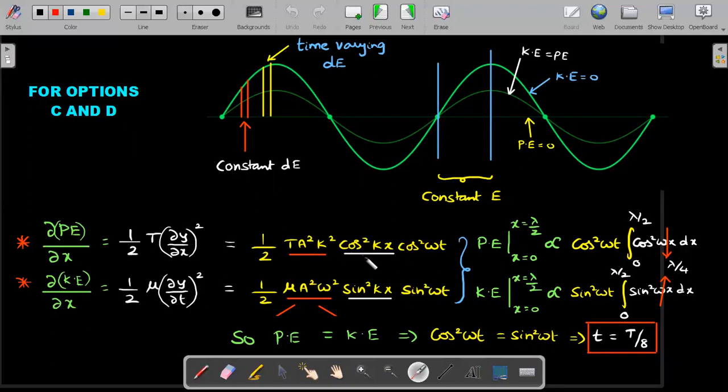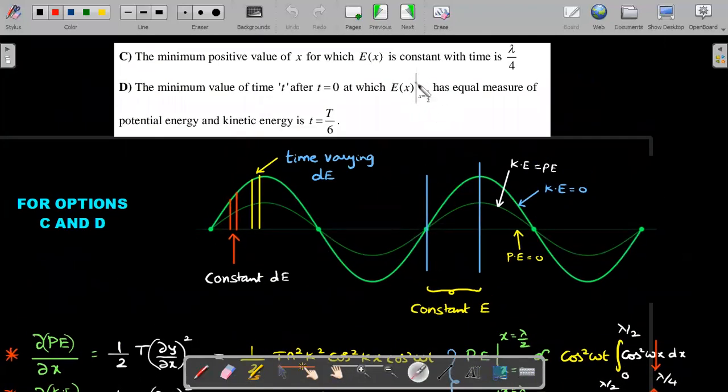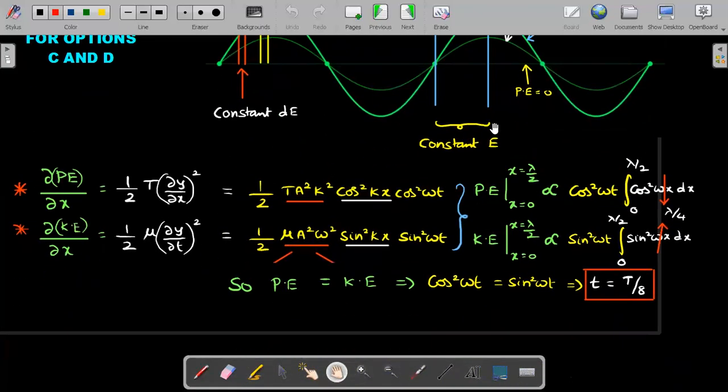We're left with only one option. I borrowed calculations from previous pages. This time I don't want these equated; I want PE calculation from zero to lambda by two. Option D asks us to measure from zero to lambda by two. Let's integrate PE and KE separately.